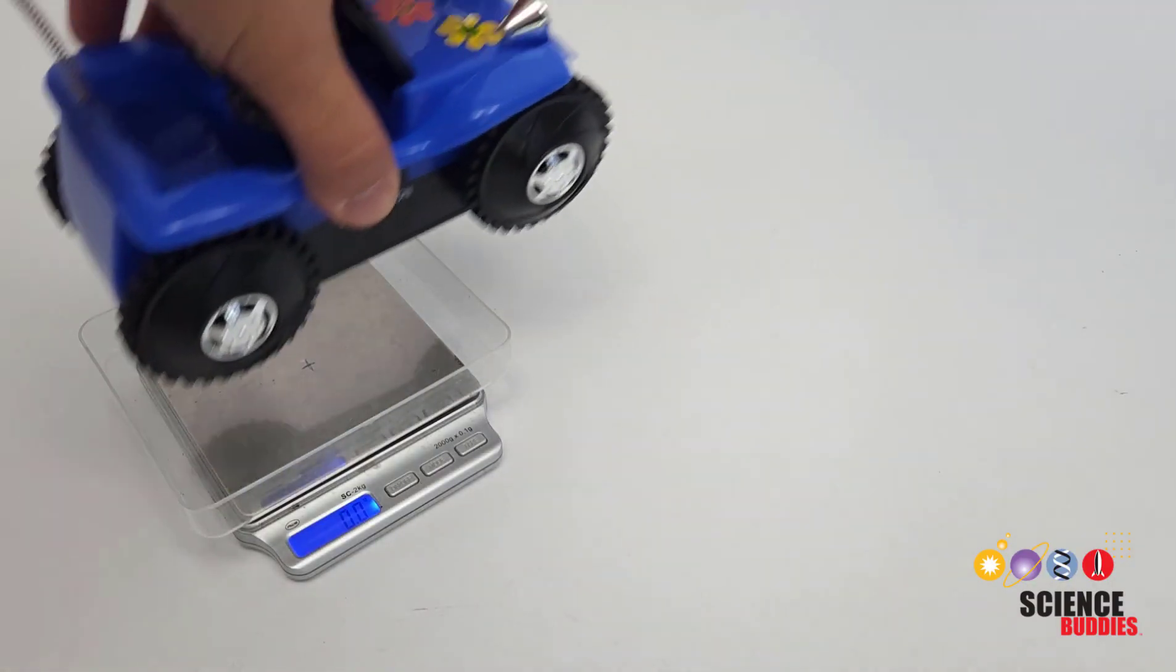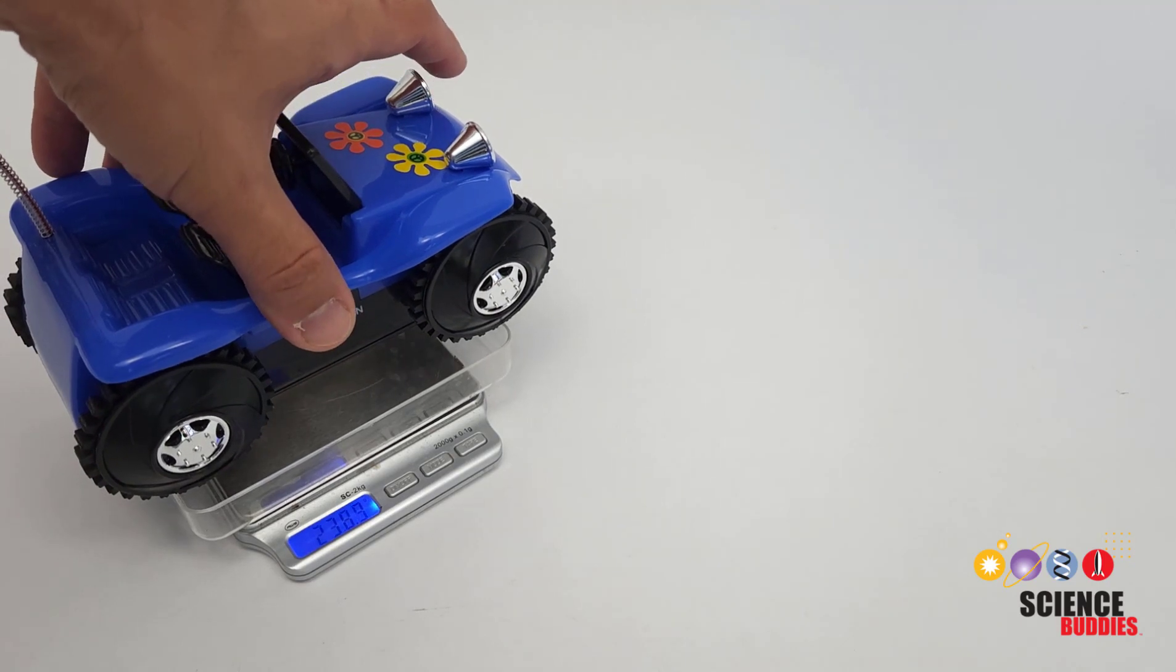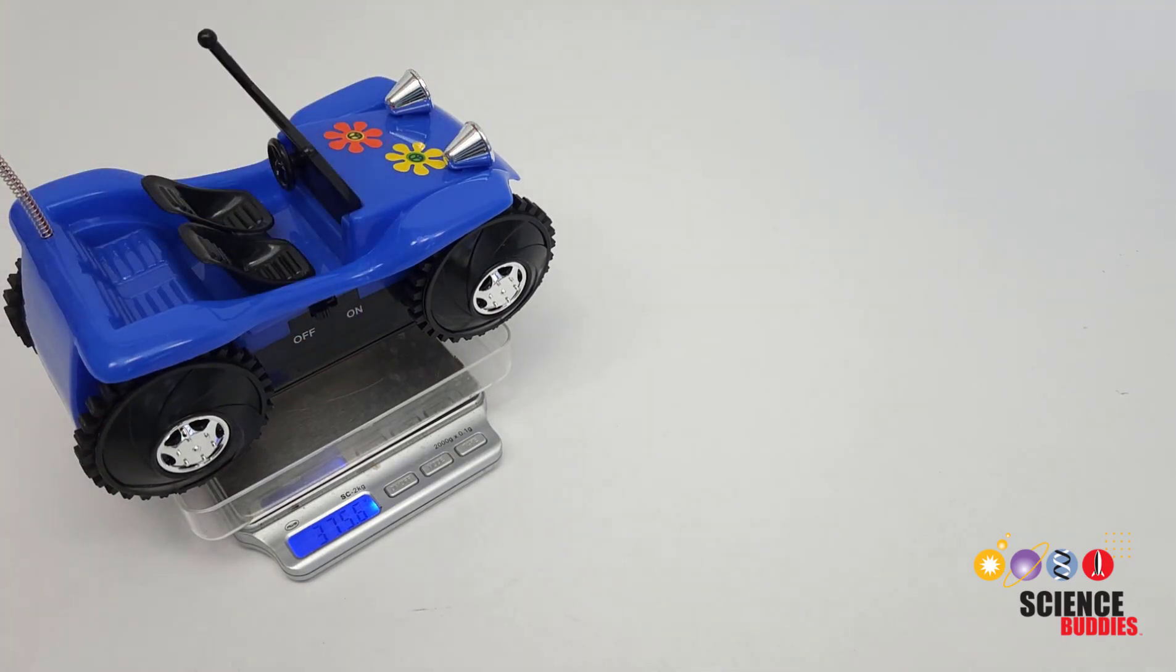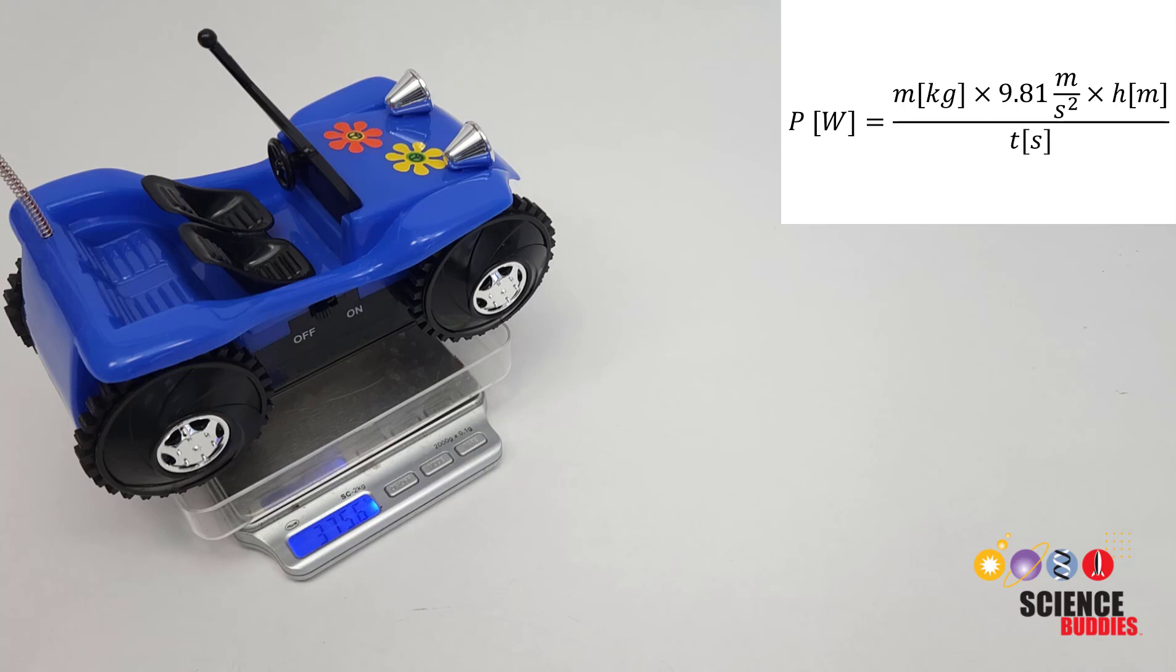If you measure the mass of your car using a kitchen scale, you now have all the pieces you need to calculate the power, but you need to be careful and keep track of your units. The power in watts is equal to the mass in kilograms times the acceleration due to gravity, 9.81 meters per second squared, times the height in meters divided by the time in seconds.